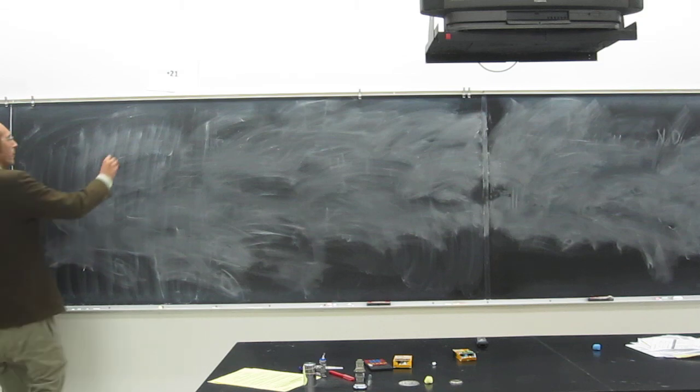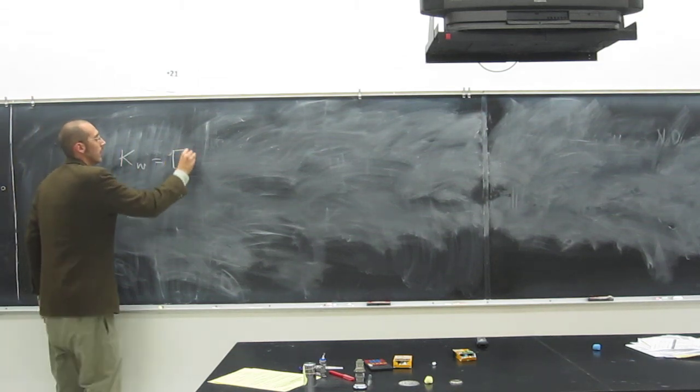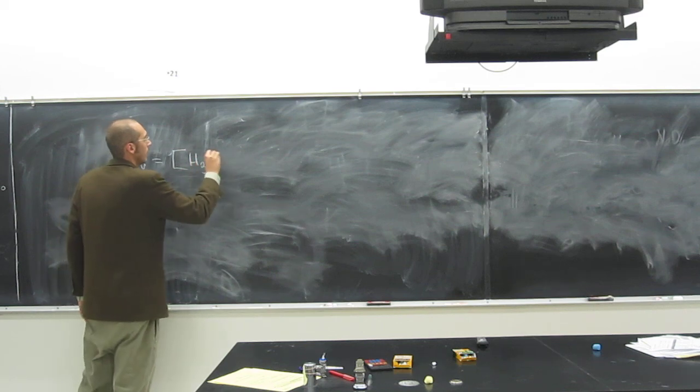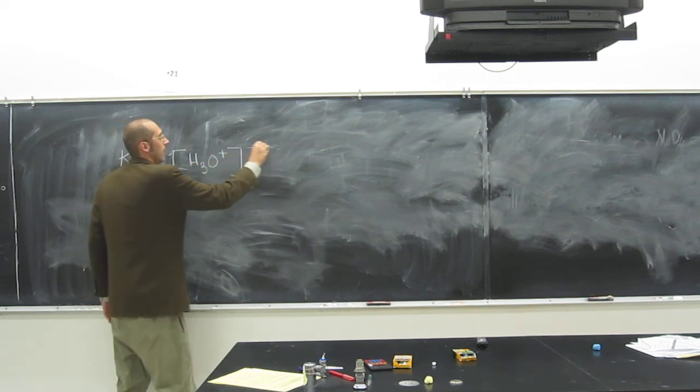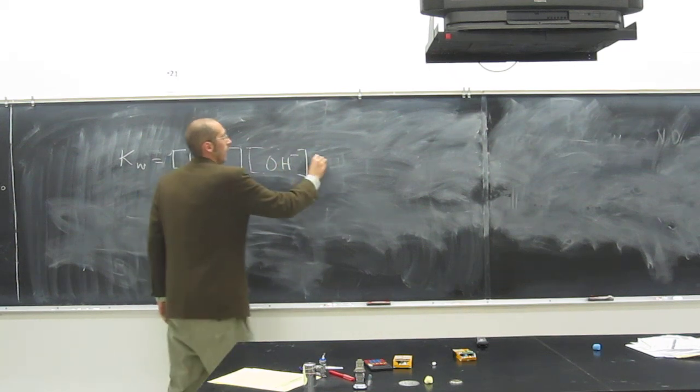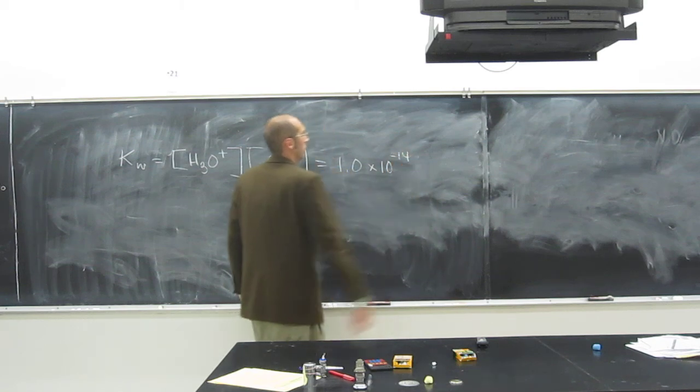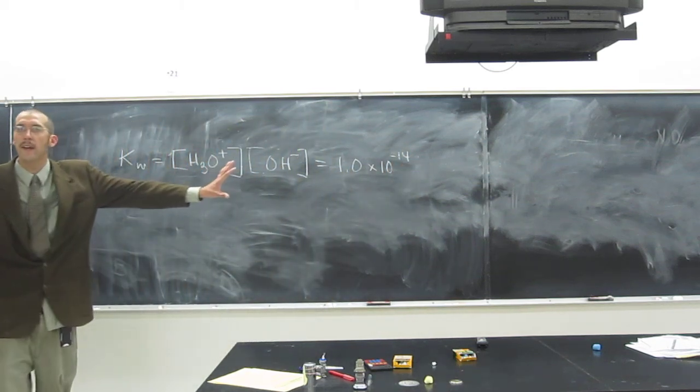So the first thing you need to remember is that Kw equals the concentration of H3O+ times the concentration of OH-. And that equals 1.0 times 10 to the negative 14th. Okay, so everybody's cool with that, right?